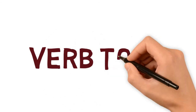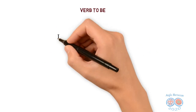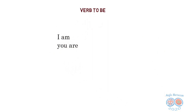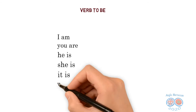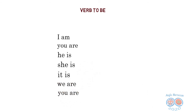Let's move now to verb to be. Can you repeat it with me? I am, you are, he is, she is, it is, we are, you are, they are. It's easy to learn them. We have I am, and then with the other pronouns we have either are or is.